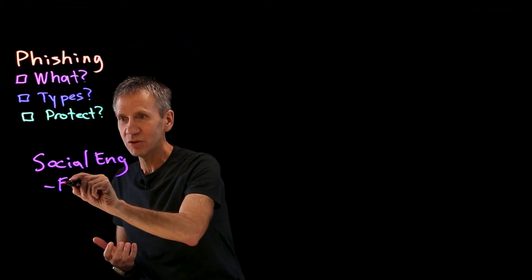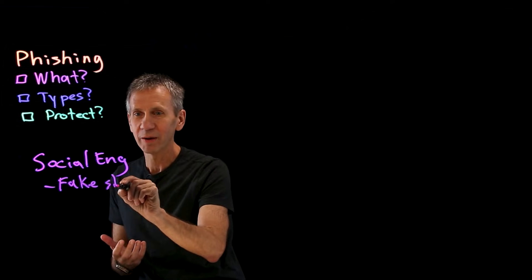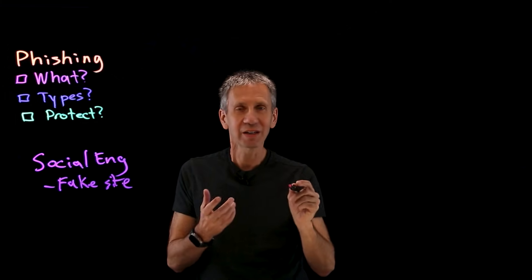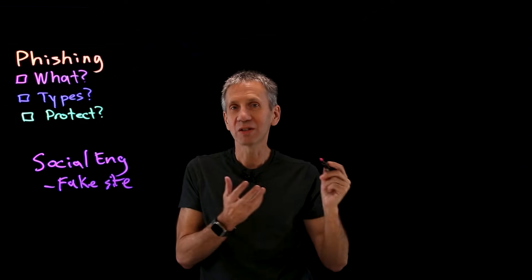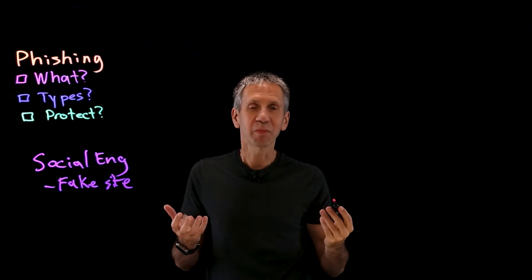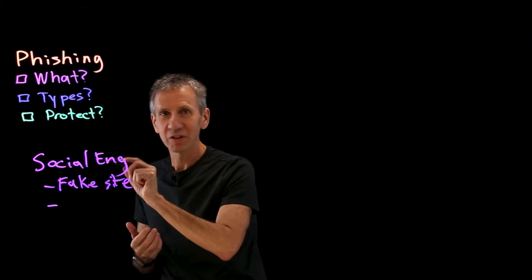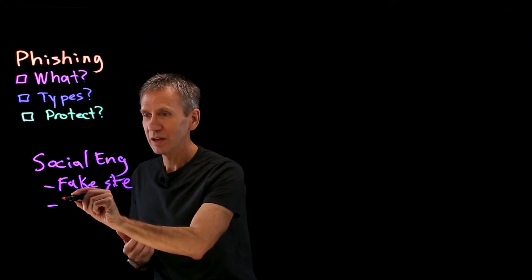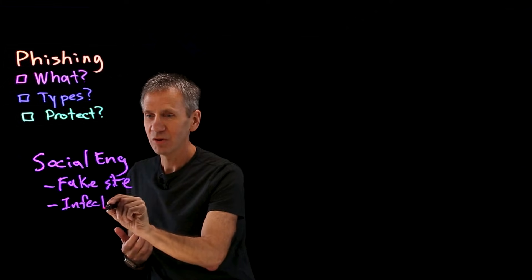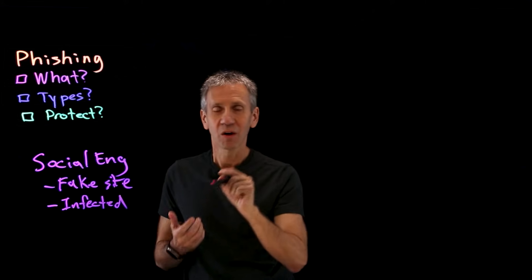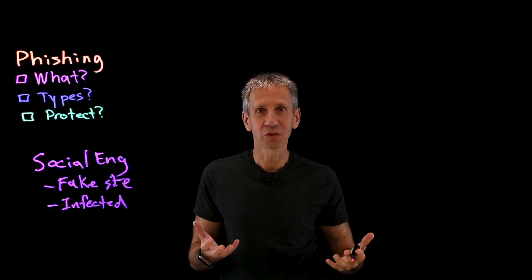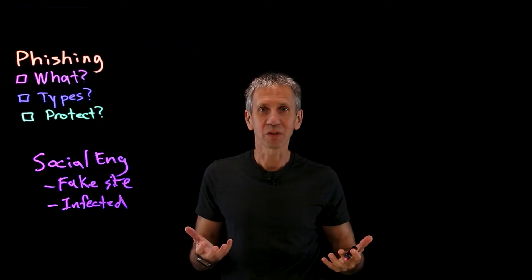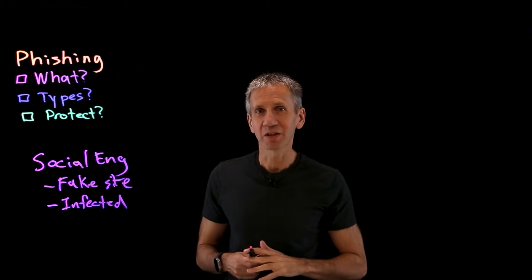What is the attacker trying to get you to do as a result of this social engineering? They're going to try to get you to click on a link that takes you to some fake website. If they can get you there, they can get you to type in your credentials and steal your account, steal corporate secrets, or gather enough information to open a credit card in your name. Another goal is to infect your system — if you click on a link or open a file, it installs malware, allowing them to see your credentials or take over your system. These are the core objectives of a phishing attack.